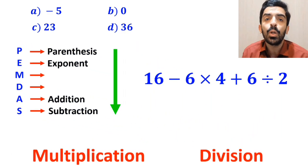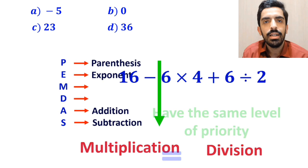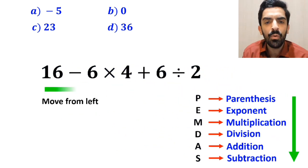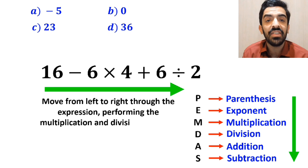However, it's very important to note that multiplication and division have the same level of priority. And all we need to do here is to move from left to right through the expression, performing the multiplication and division as we go.